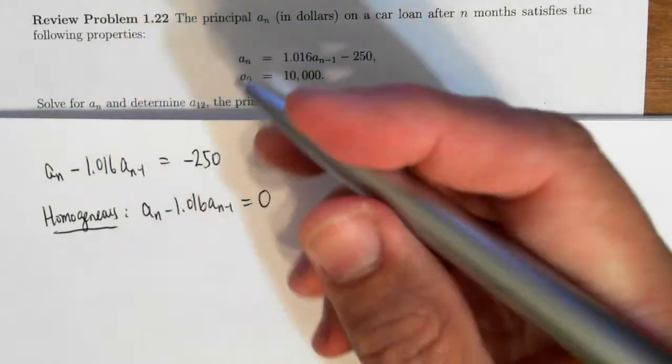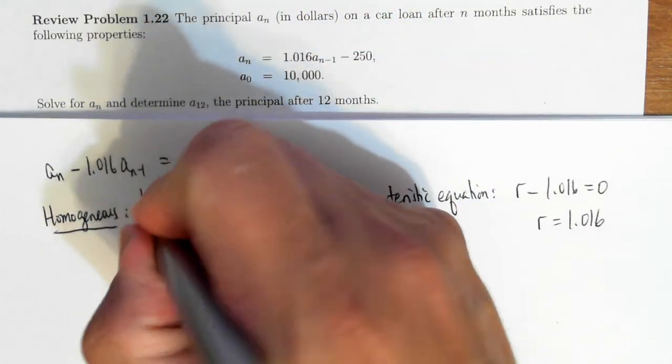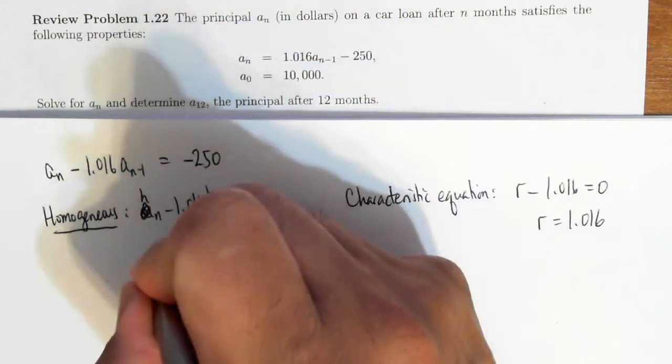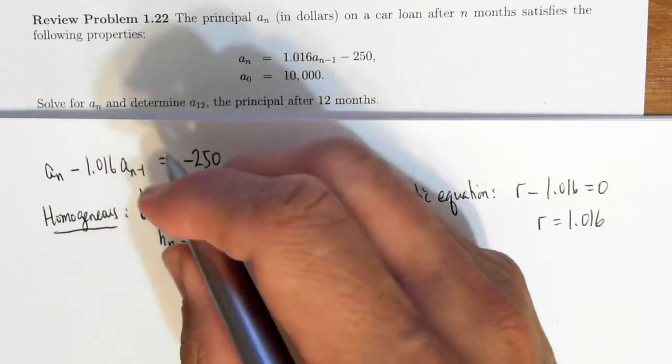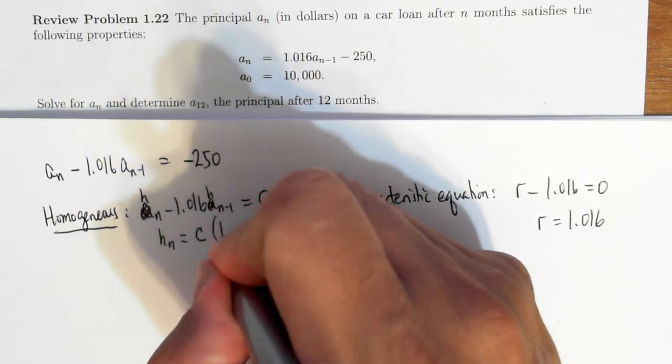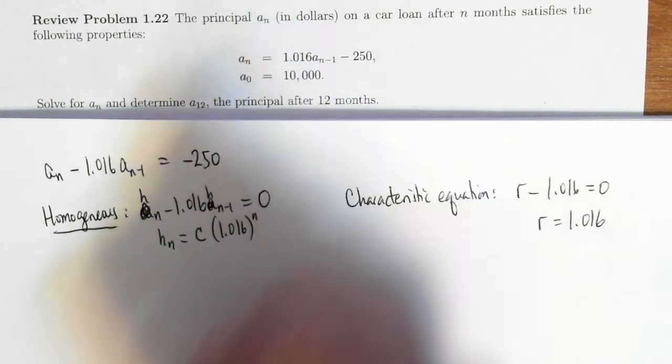And so the homogeneous solution, I should have used h's for homogeneous, the homogeneous solution will just simply be some constant times 1.016 to the nth power.